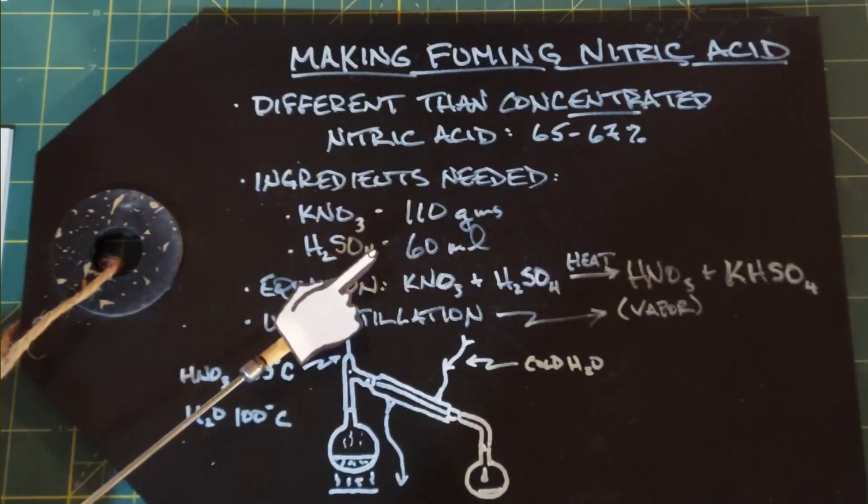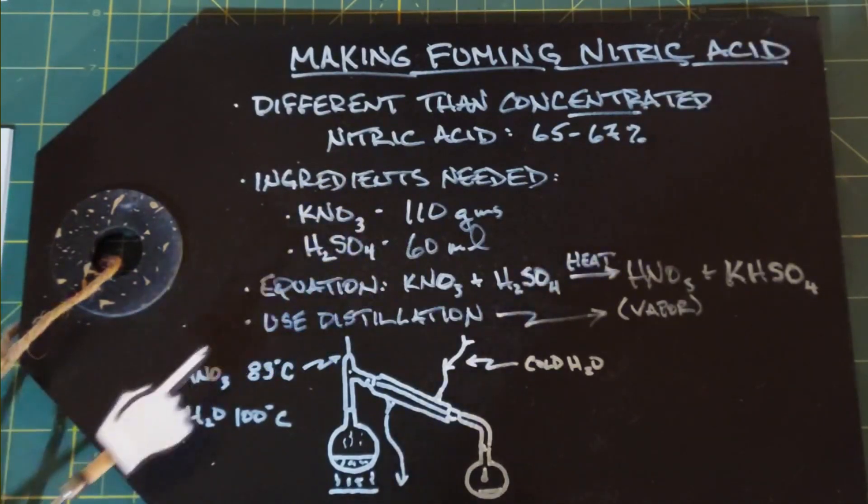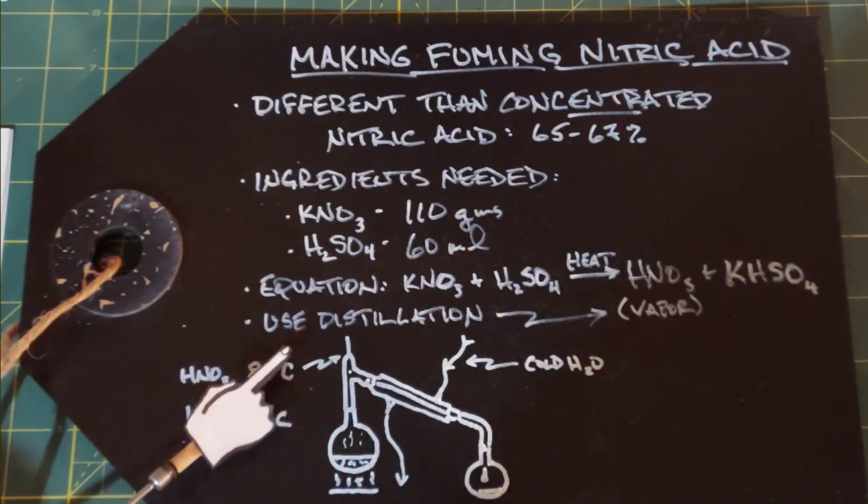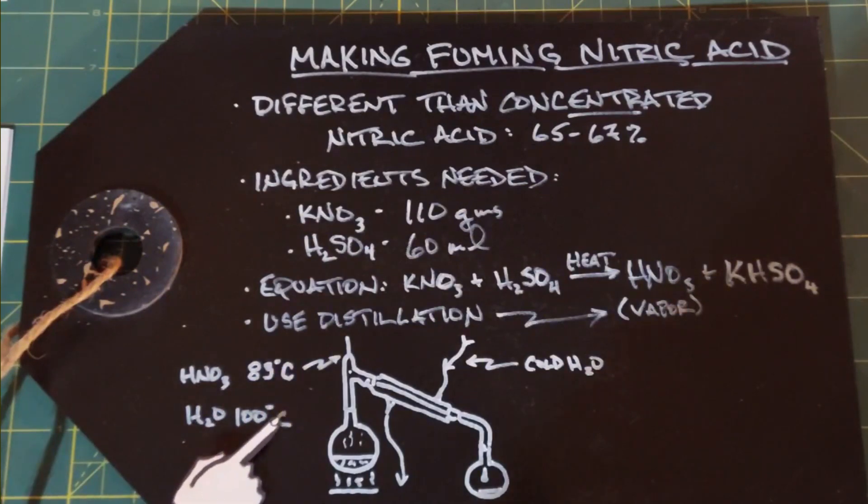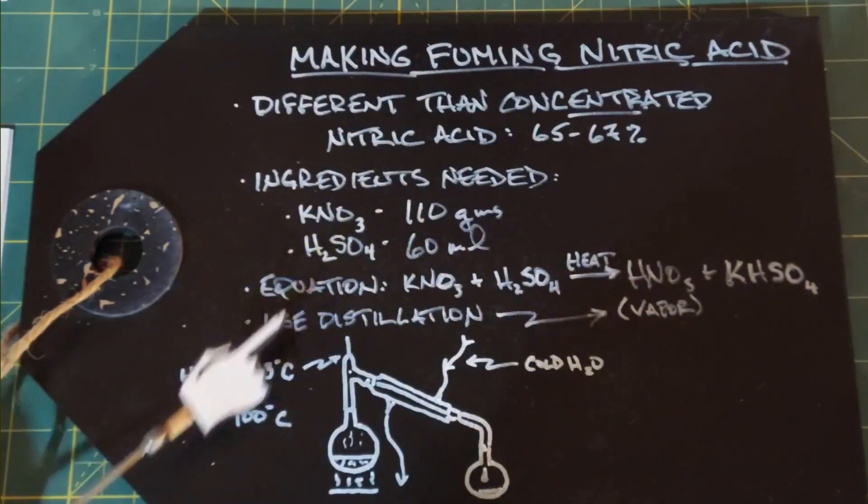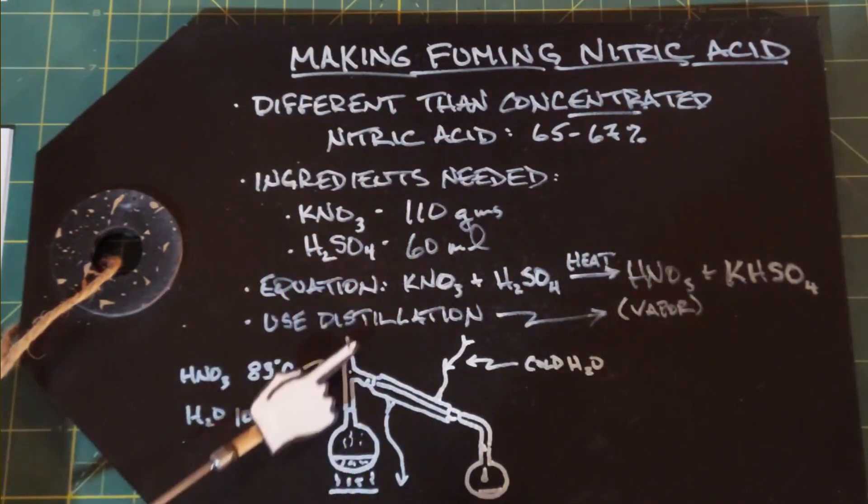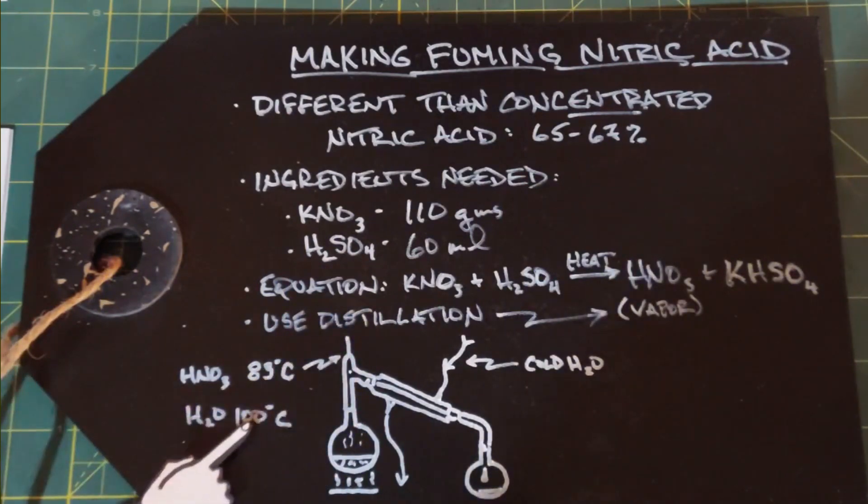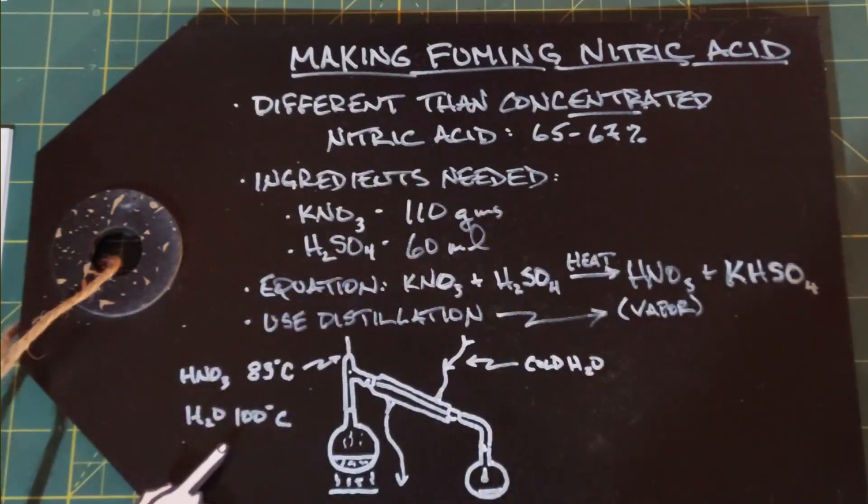As soon as you mix these two together, small amounts of nitric acid are formed. When you heat it, it drives the reaction forward so that more nitric acid is formed. Nitric acid has a boiling point of 83 degrees Celsius, water has a boiling point of 100 degrees Celsius, so this will boil before the water. If there's any water from your sulfuric acid, you're okay because as soon as this temperature rises at the top of the distillation, you know you're starting to get water and you can stop it and remove the heat.